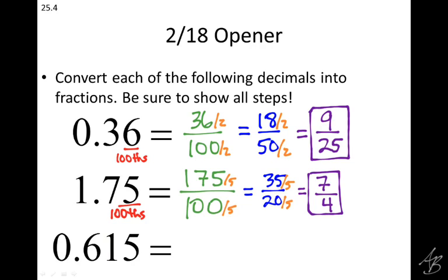Kind of like the last one, we could have reduced this by a bigger number. Instead of reducing by five, we could have reduced by 25, and it would have taken one step. But again, I think it's a lot easier to see that they're both divisible by five, and so we'll just reduce by five until we're done.